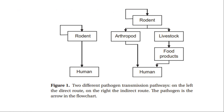Rodent-borne diseases can be transmitted by two different pathways. The first pathway is a direct route, where rodents can pass pathogens to humans by biting them, or because humans consume food products or water contaminated with rodent feces. Moreover, humans can come in contact with surface water contaminated with rodent urine — that is, leptospirosis.